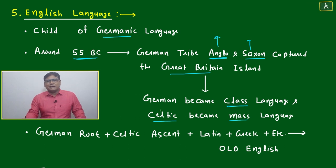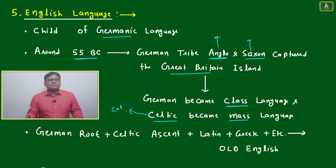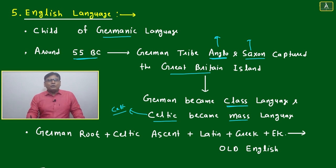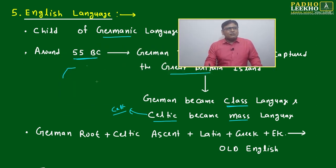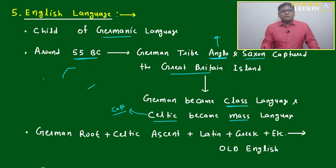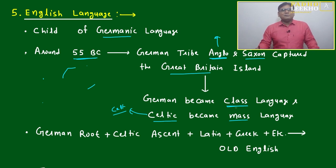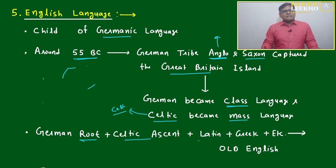Celtic became the mass language. Celtic was the local language of the Great Britain island at that time. There are very beautiful stories and backgrounds. Celtic languages still exist — many people speak Celtic languages, but not many in the Great Britain island itself. In surrounding areas like Scotland and some other regions, many communities still speak Celtic. Once Germanic attacked, the native people were removed or reduced to a servant level, and Germanic became the class language with a Celtic accent.